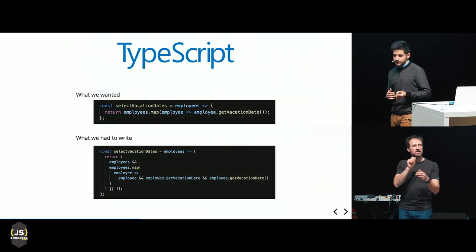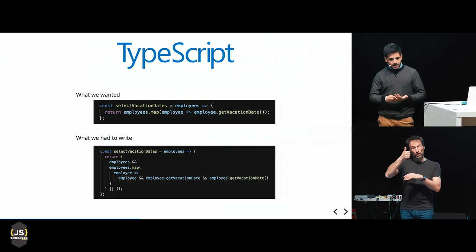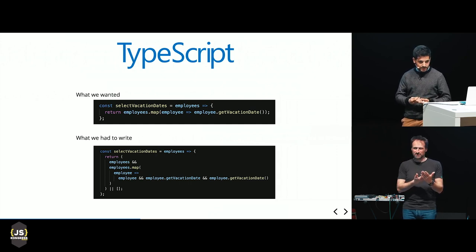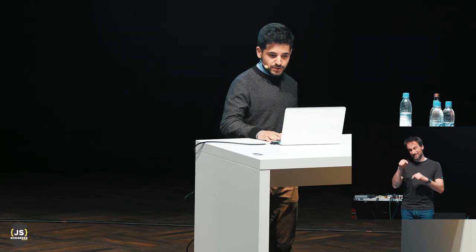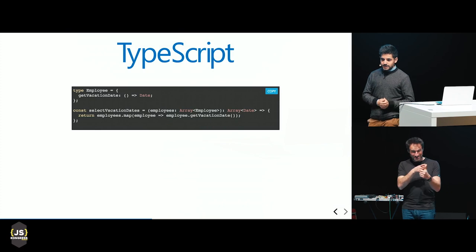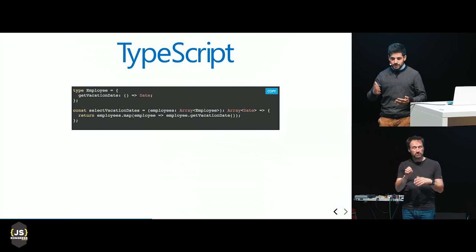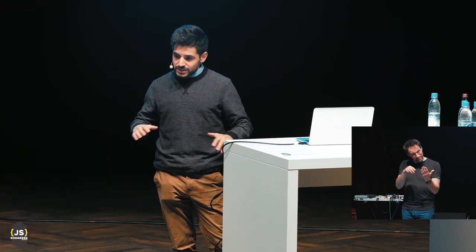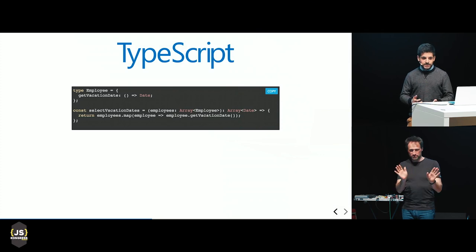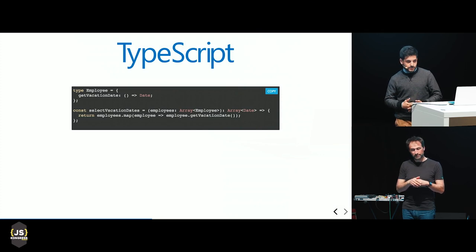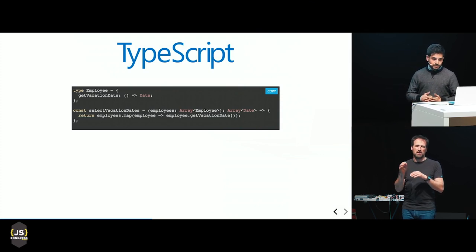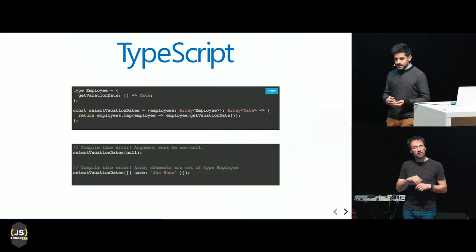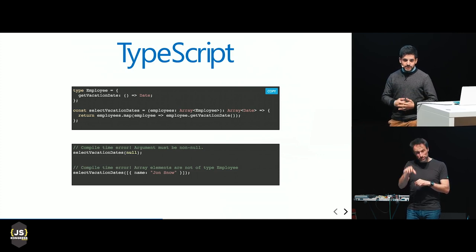Going back to our original example, the top function is what we wanted to write, and the bottom one is what we had to write because we couldn't control what people were doing with it. In TypeScript, there's a simple solution: first, we define a type for employees — an object with the required getVacationDate method. The function body doesn't change at all; we just add annotations for the arguments and return type. Cases like passing null or an array with malformed objects become compile-time errors, so we don't have to test it out in the browser.